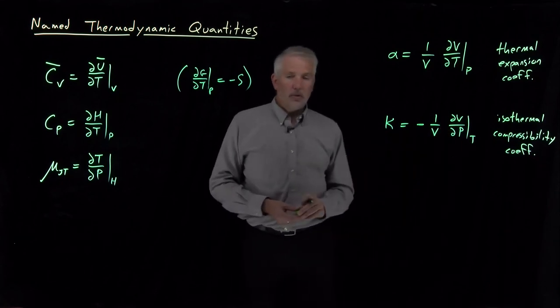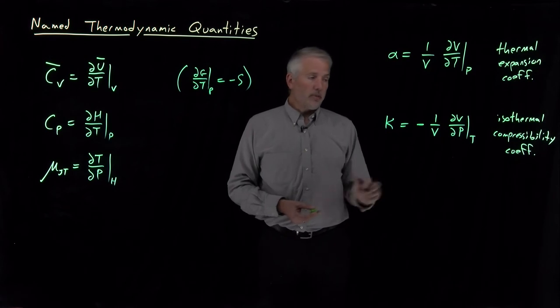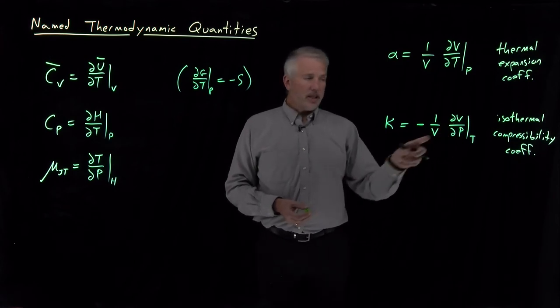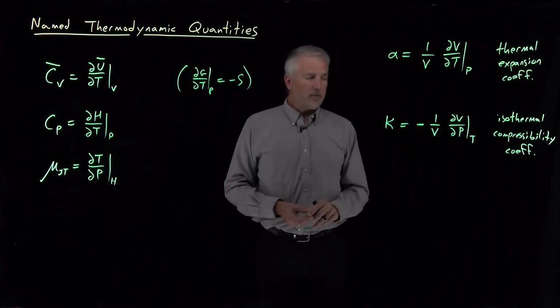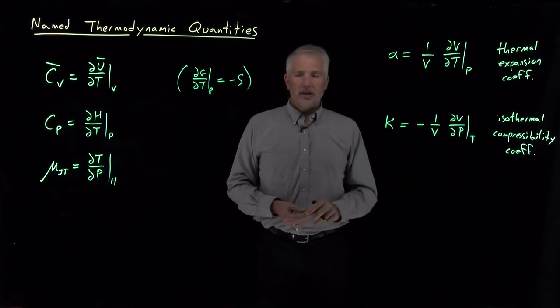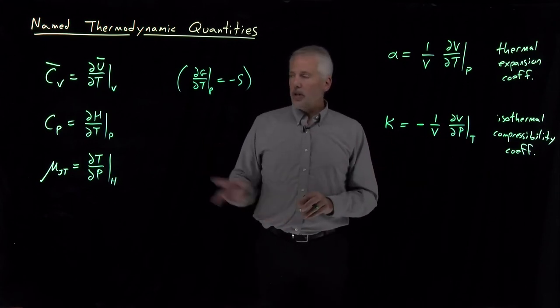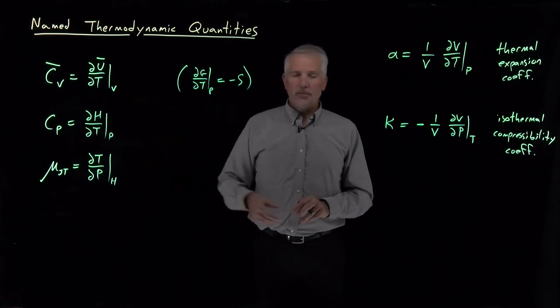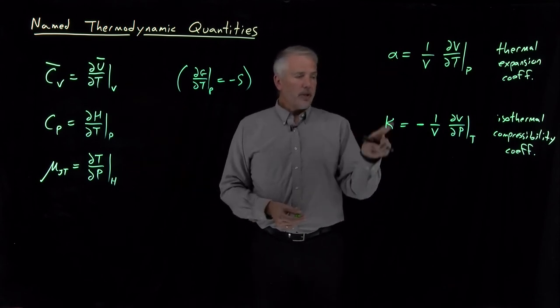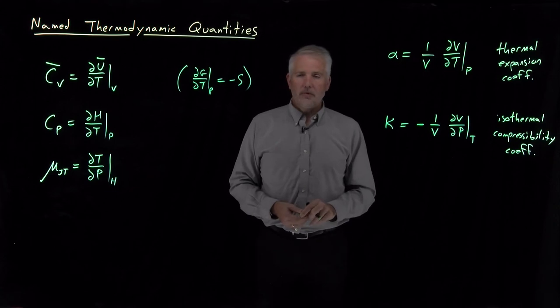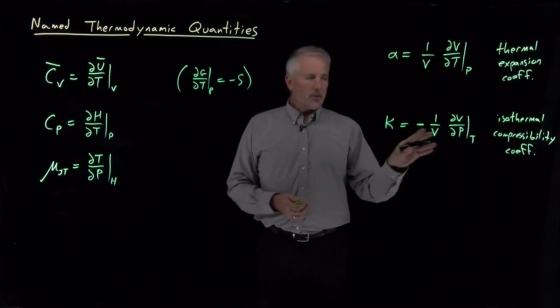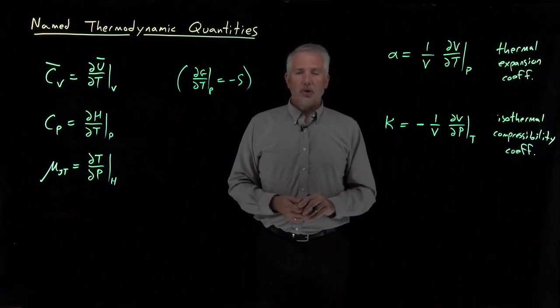That's also a practically important quantity. If the pressure is changing, this will tell us how much the volume of the object will change in response to that change in pressure. So with this collection of five different named quantities—the heat capacities, the Joule-Thompson coefficient, thermal expansion, and isothermal compressibility coefficients—that completes the list of things that we simply give names to because they're practically important and can be measured relatively easily in the lab.